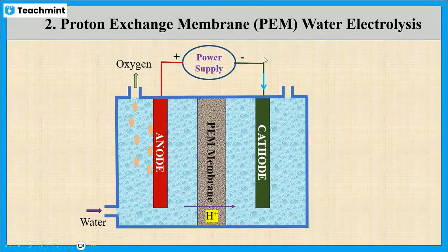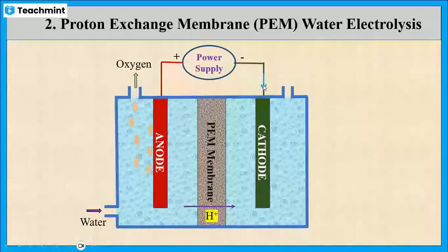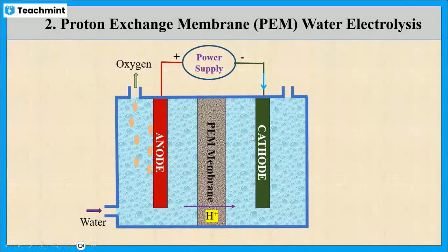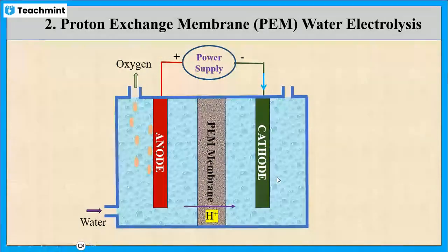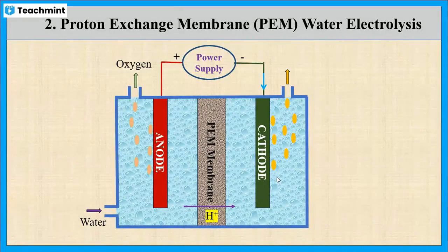You can observe here. At cathode, there will be a recombination of protons and electrons which produces hydrogen gas.